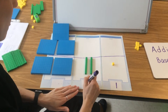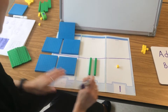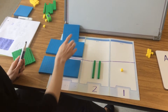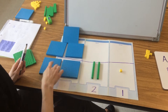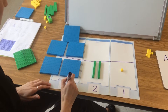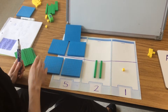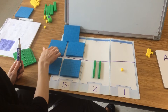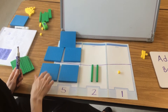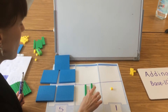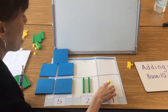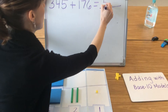I count my remaining tens — there are 2 — and then I count my hundreds: 100, 200, 300, 400, 500. So the total is 521: 100, 200, 300, 400, 500, 510, 520, 521.